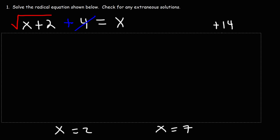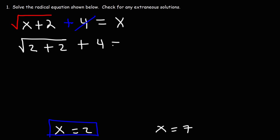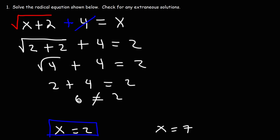Those are the two solutions for this radical equation. The question is, which one is extraneous and which is the real solution? We need to test them both. Let's start with x equals 2 — replacing x with 2 in the original equation: 2 plus 2 is 4, the square root of 4 is 2, and 2 plus 4 is 6. Since 6 does not equal 2, this solution doesn't work. So x equals 2 is an extraneous solution.